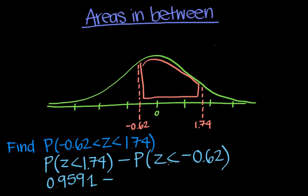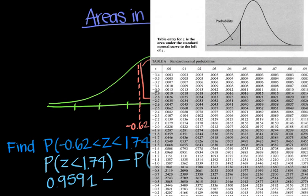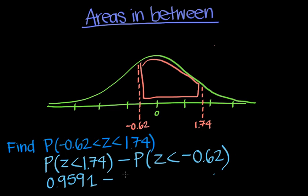Minus the probability that z is less than negative 0.62. So now let's find that on the other half of the normal distribution table. So negative 0.6 would be right here, and then we'd go across to negative 0.62, which would be 0.2676. And now we'll write that out here.